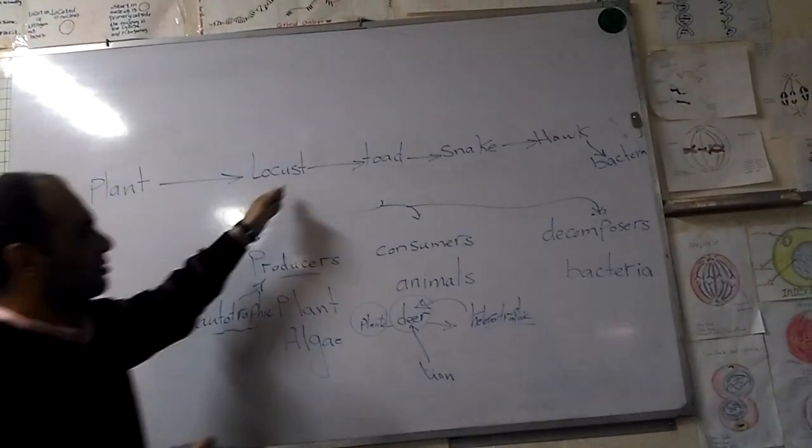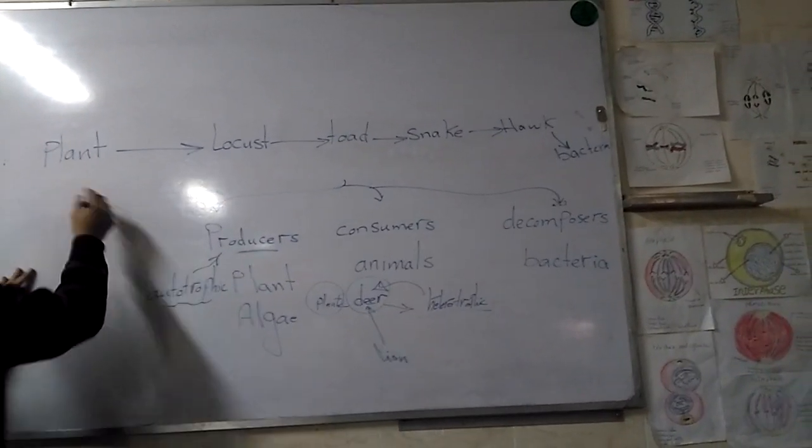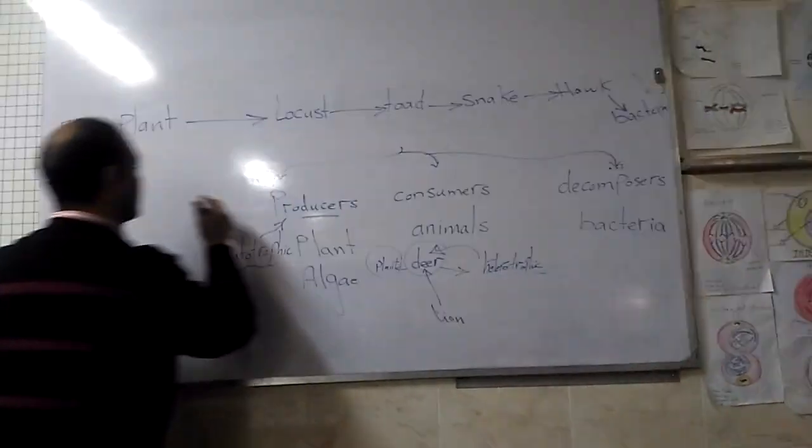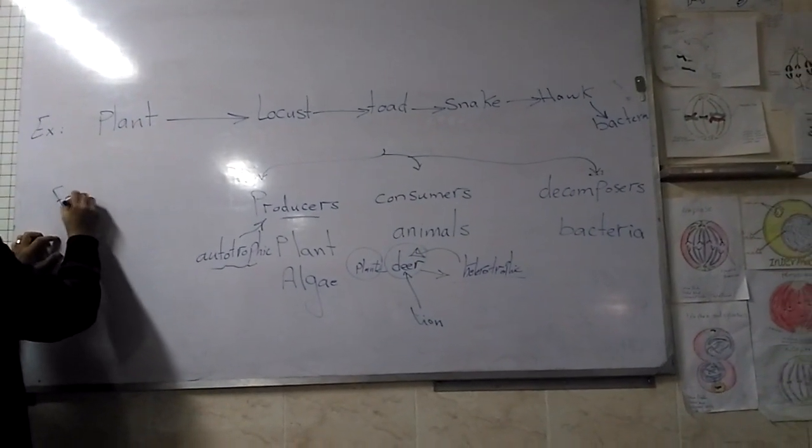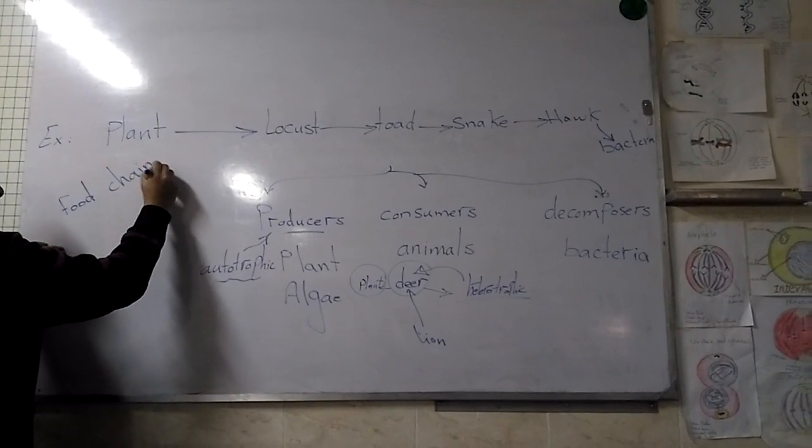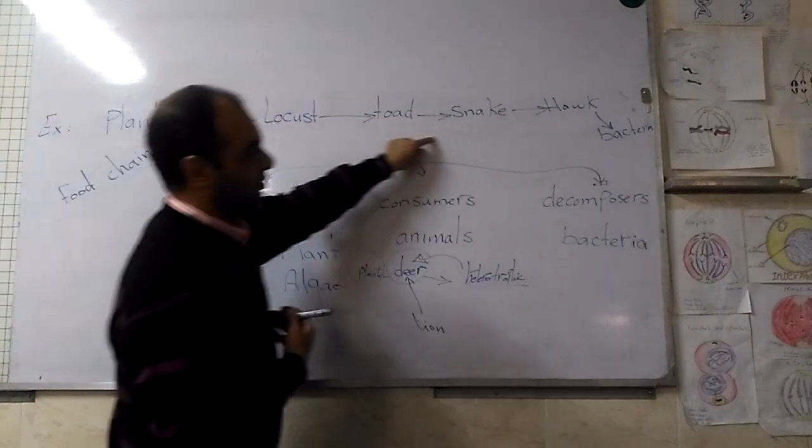We can say about this sequence - plant to locust to toad to snake to hawk to bacteria - this is a food chain, similar to a chain.